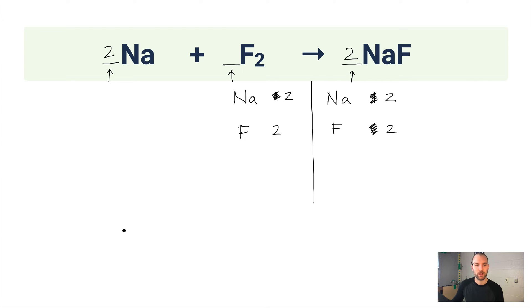So am I balanced now? Yeah, I am. My numbers for sodium match and my numbers for fluorine match. So what would the balanced equation look like if I were to write it all out? It'd look like this. Two Na plus F2 makes two NaF.